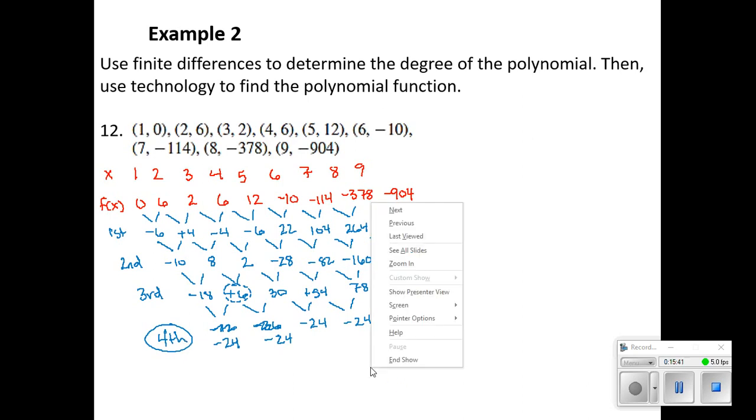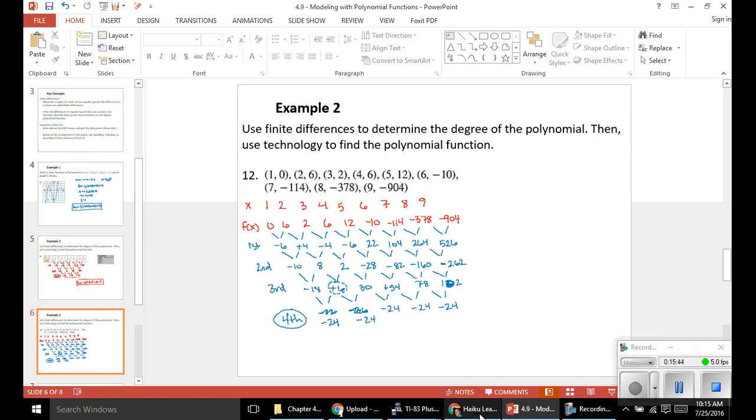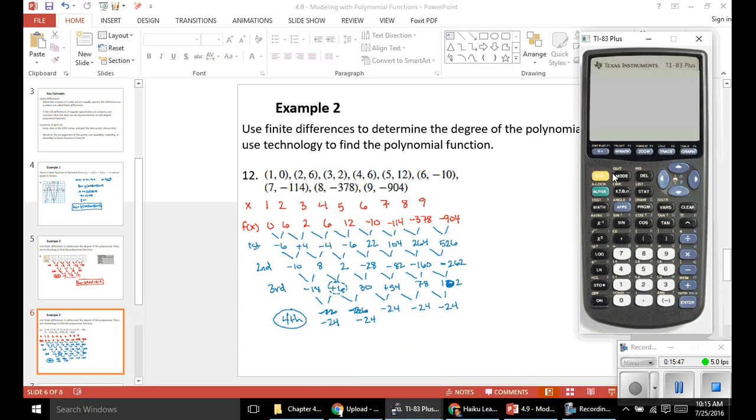Let's go to the calculator. And in our calculator, once we fire it up, we will clear the screen, go back to the stat menu. We want to edit our lists. And if you toggle to the up here where it says L2, if you hit clear and enter, it wipes out that whole list, which is helpful. Makes it much easier than deleting each individually. L1, our X coordinates. 1, 2, 3, 4, 5, 6, 7, 8, 9.